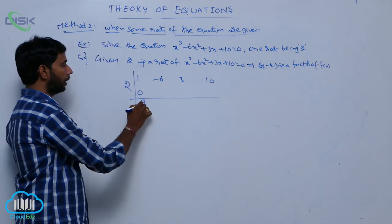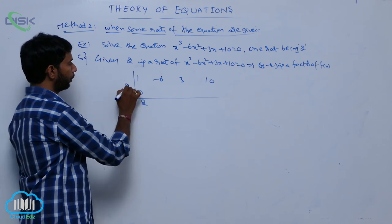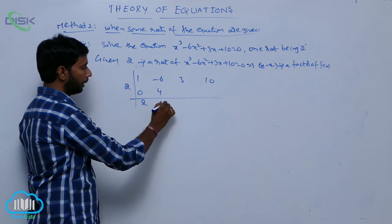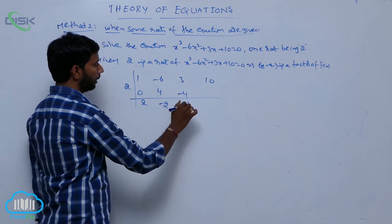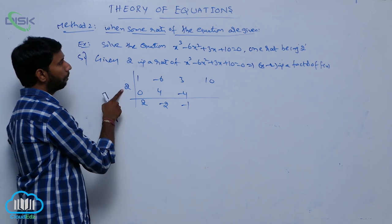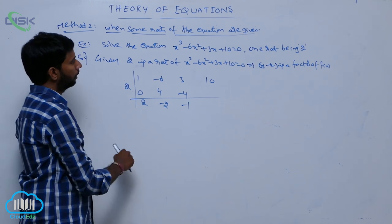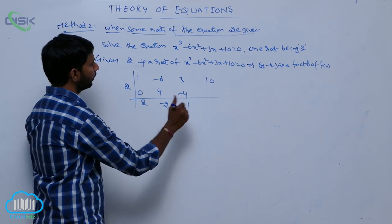1 plus 0 equals 2. 2 times 2 equals 4. -6 plus 4, -2. 2 into -2, -4. 3 minus 4, -1. -1 into 2. Here -1 into 2 equals -2.